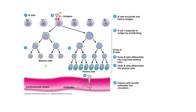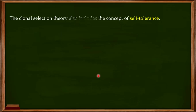The memory cells give the immune system a prolonged, long-lived memory about that particular antigen. The plasma cells produce a large number of antibodies that enter the circulatory system and reach the specific antigens that have entered the body, neutralizing them. So two things occur: the memory cells maintain memory about the antigen, and the plasma cells produce antibodies to neutralize it.